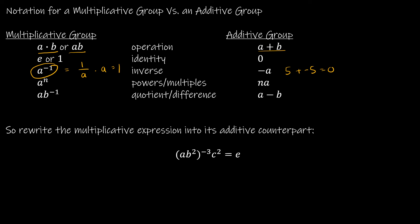The inverse for an additive group is negative A — for example, 5 plus negative 5 gives 0. For powers or multiples, we say A to the nth power in multiplicative notation, as opposed to n times A in additive notation. For division or difference, we use A times B inverse in multiplicative notation — which is A times 1/B, or A divided by B — versus A minus B for a difference in additive notation.